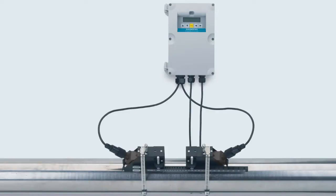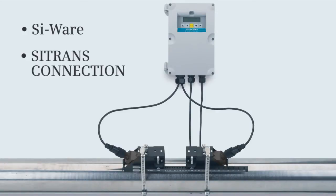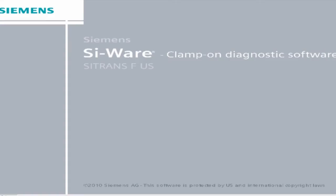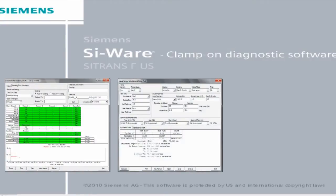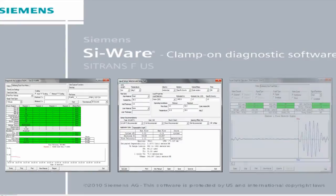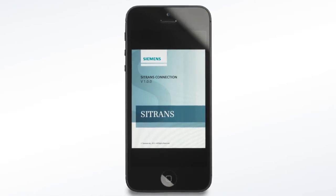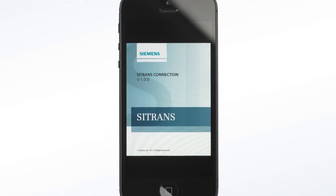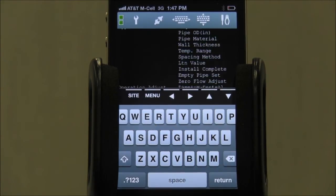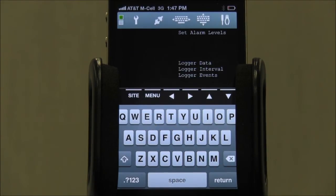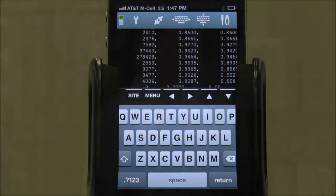The FSTO20 can also be configured with SciWare or C-Trans Connection. SciWare is a PC software utility featuring a variety of communication and diagnostic tools to optimize the performance of your Siemens clamp-on flow meter. C-Trans Connection is a mobile app that enables programming of any Siemens clamp-on meter from your Apple iOS device, and is also a great tool for meter and process diagnostics.